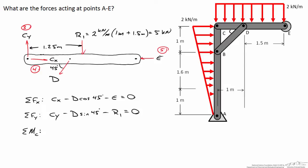For the moment balance I'll choose point C to eliminate CX and CY, using the convention that counterclockwise is positive. Point D is one meter to the right of C, creating a clockwise moment: negative one meter times D·sin45. The resultant R1 also creates a clockwise moment at 1.25 meters from C: negative 1.25 times R1. These two moments sum to zero. That gives us equations 2, 3, and 4 — still five unknowns and only four equations, so we need another free body diagram.